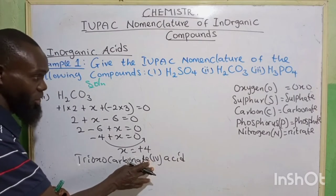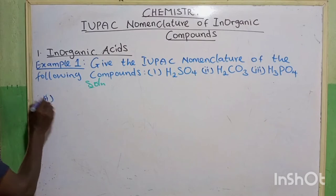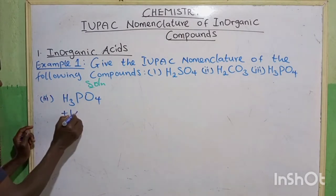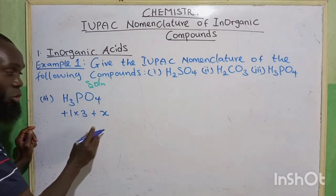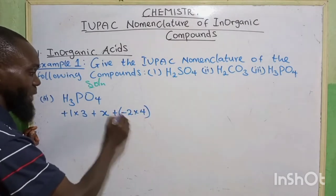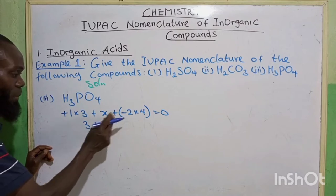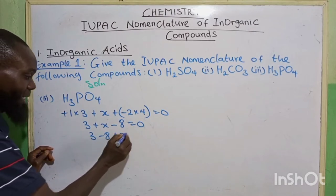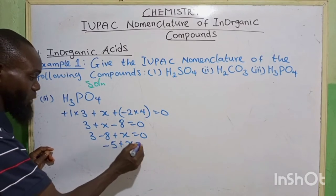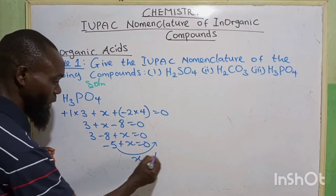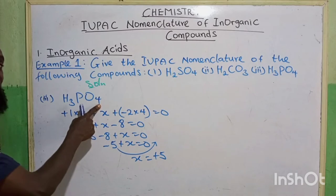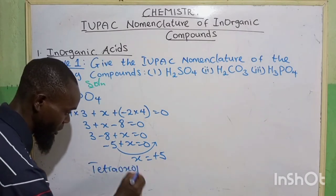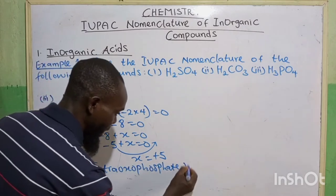The next one, we have H₃PO₄. We have to find the oxidation state of phosphorus. The valency of hydrogen is plus 1, multiplied by 3, plus phosphorus (X), plus oxygen minus 2, multiplied by 4, equals 0. So 1 times 3 gives 3, plus X, plus minus 2 times 4 gives minus 8, equals 0. Collecting like terms: 3 minus 8 plus X equals 0, giving minus 5 plus X equals 0, so X equals plus 5. From the back: tetraoxophosphate(V) acid.